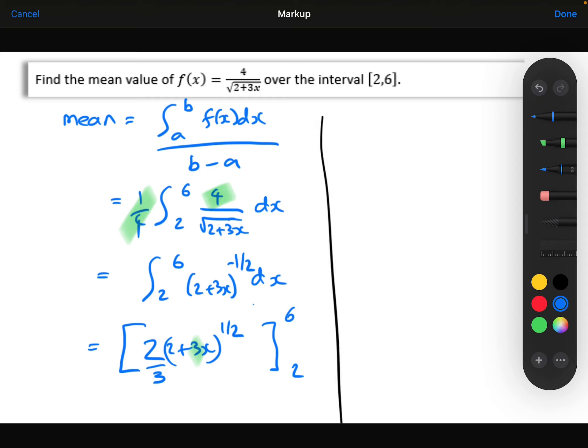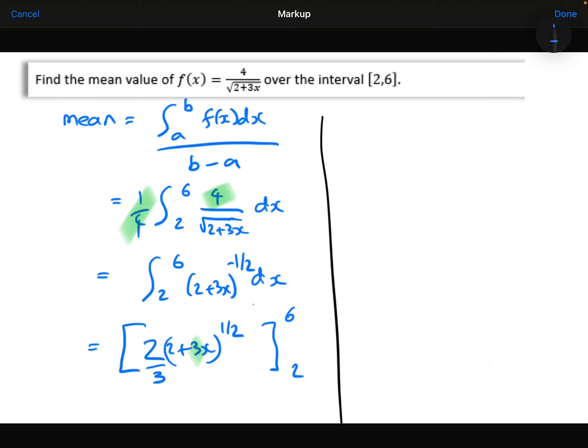Right, let's substitute our limits in. So substitute the 6 in. So 2 plus 3 times 6 to the power of 1 half. Minus 2 plus 3 times 2. So we've got 2 thirds of root 20. Minus 2 thirds of root 8.